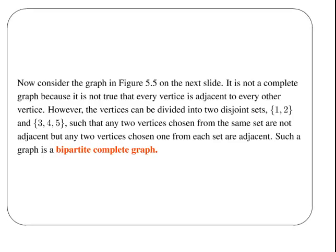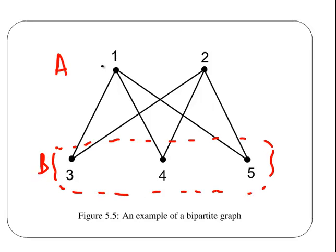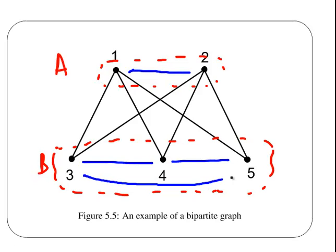Now consider the graph on the next slide. Notice that it is split into two groups: Group A up here and Group B down here. The vertices in Group A are connected to each vertex in Group B, and vice versa, but they are not connected to each other. So it is not a complete graph.